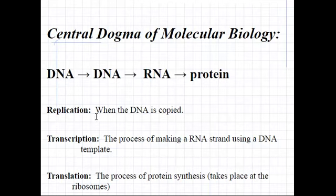First, replication. This is when DNA is copied, so DNA produces more DNA. This has to happen in cells before the process of cell division can occur.